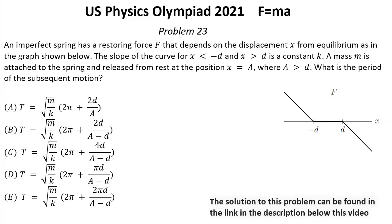Problem number 23. An imperfect spring has a restoring force F that depends on the displacement X from equilibrium as in the graph shown below.